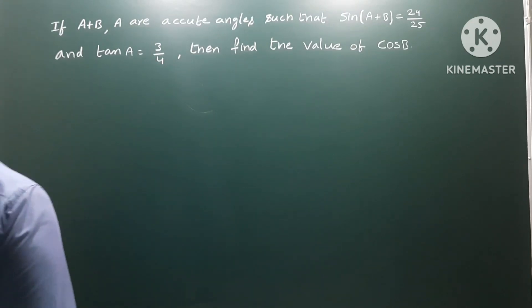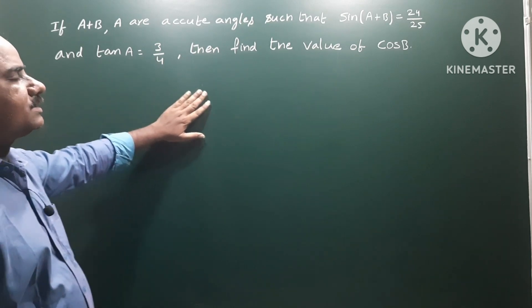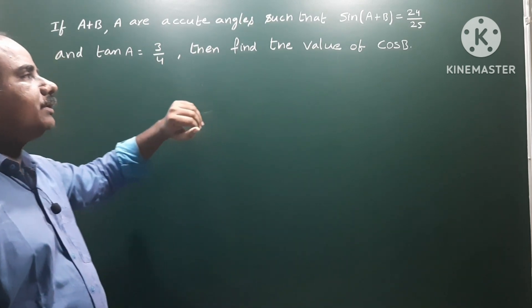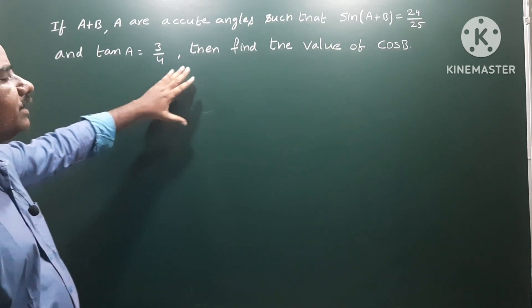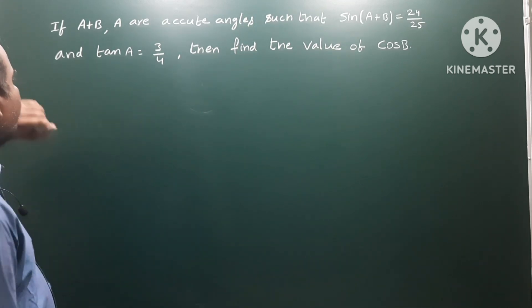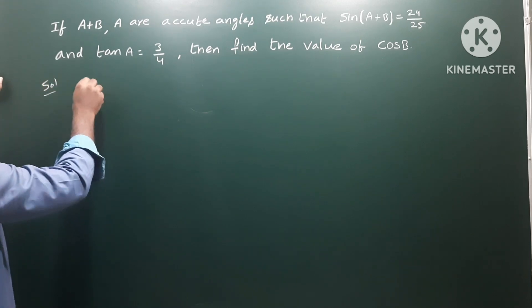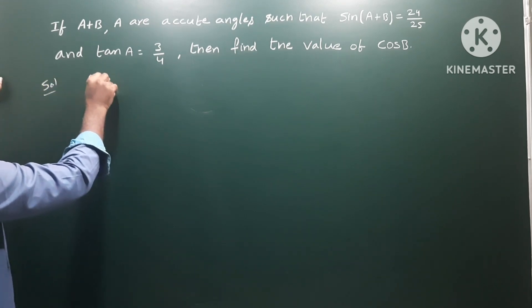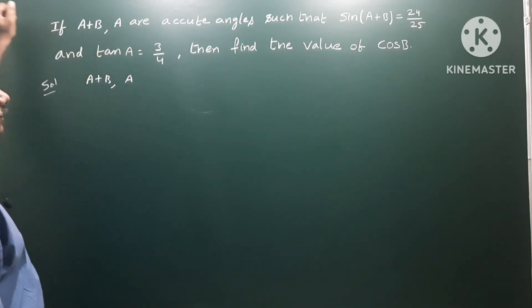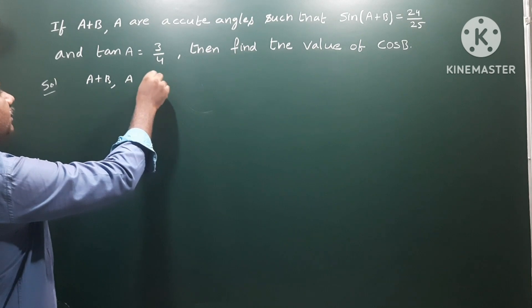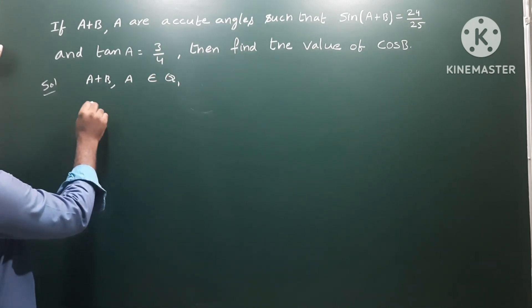If A+B and A are acute angles such that sin(A+B) = 24/25 and tan(A) = 3/4, then find the value of cos(B). Solution: A+B and A are both acute angles, meaning they belong to the first quadrant. And sin(A+B) = 24/25.